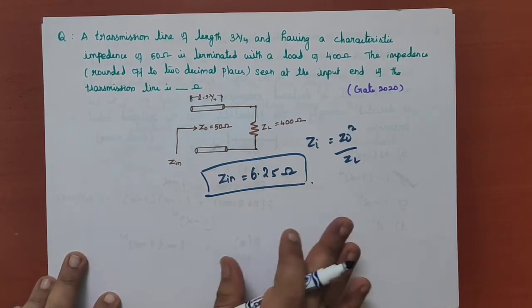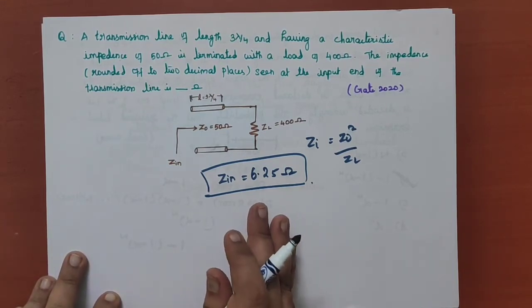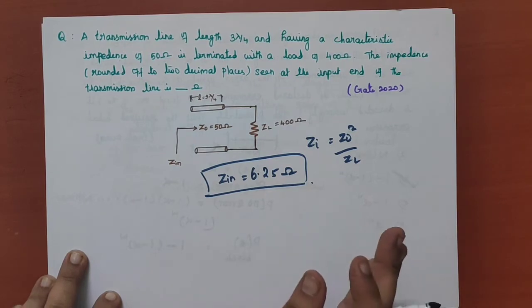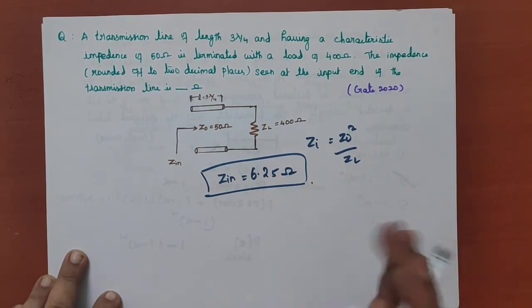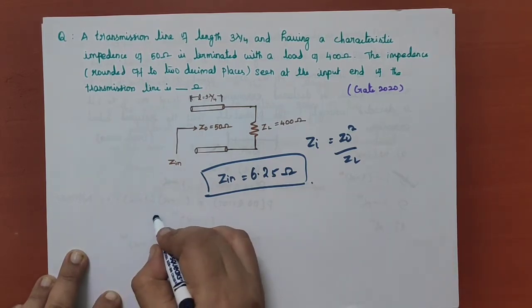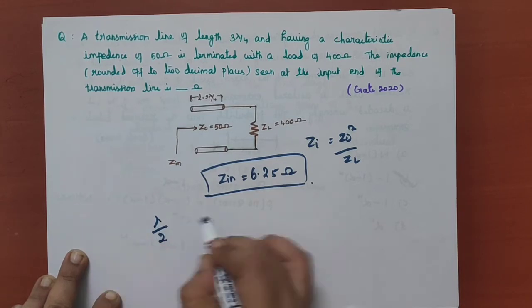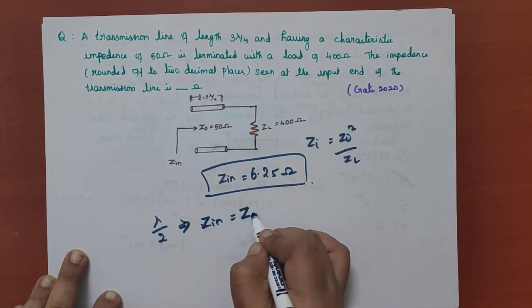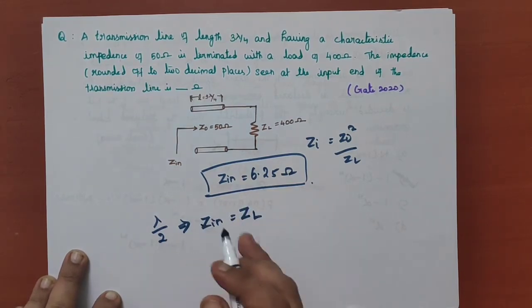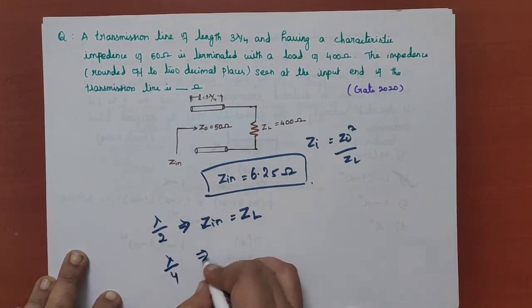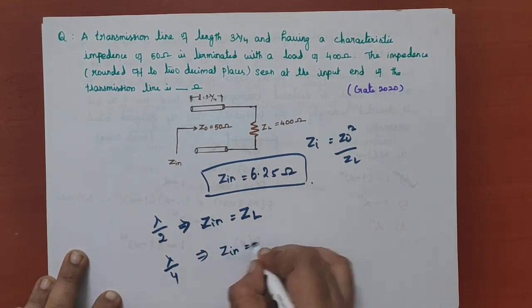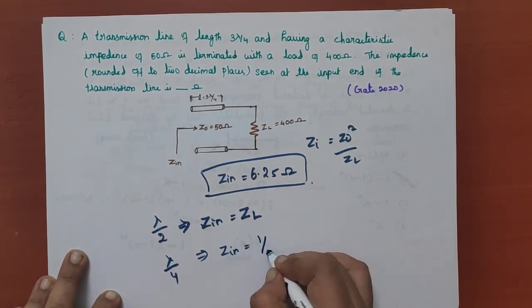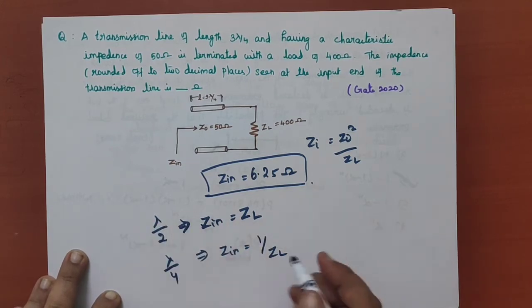Another important thing to remember: when the transmission line is exactly one-half wavelength, the input impedance equals the load impedance — that is, when length equals lambda by 2, Z-in equals ZL. When the transmission line is one-quarter wavelength, that is lambda by 4, Z-in equals Z-naught squared divided by ZL, which is the inverse of ZL.